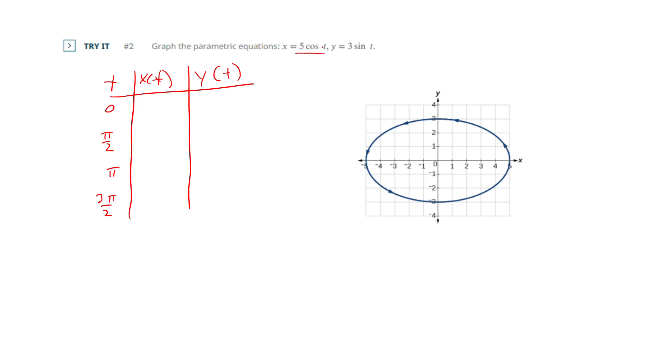So if I put 0 into this function, cosine of 0 is 1 times 5. This gets me the maximum value that I'm going to get here. I'm going to get 5. So I get a real easy point. Now if I put 0 into this one, it's all going to drop out, right? Because sine of 0 is 0. So I get 5, 0. Nice easy point.